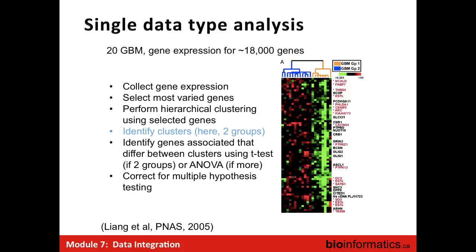They identified clusters because they were looking at heterogeneity of this cancer and trying to identify homogeneous subsets of patients. When looking at disease versus healthy individuals, it's the same kind of problem — you're trying to identify genes most differential between the diseased group and the healthy group. So you can skip the clustering step, and the rest would be the same.